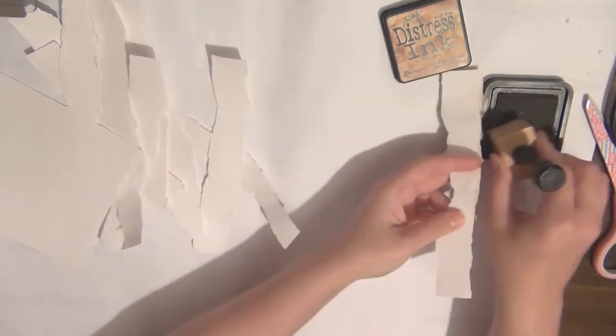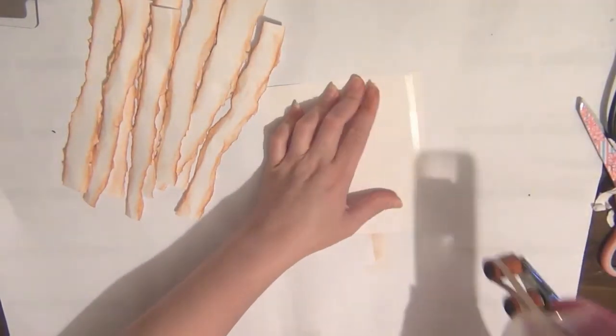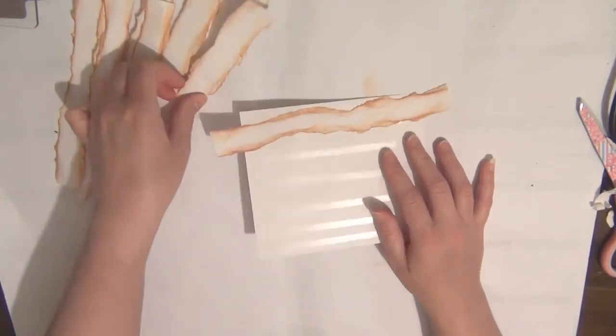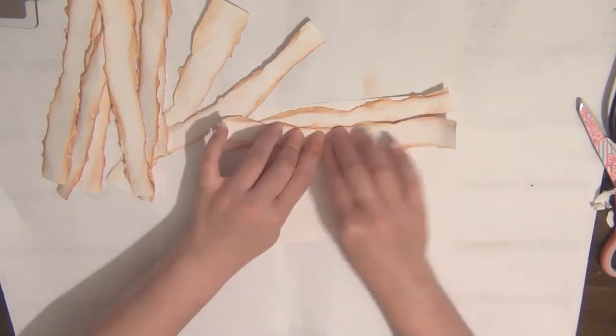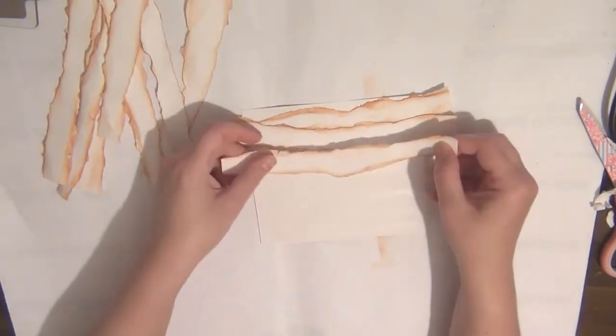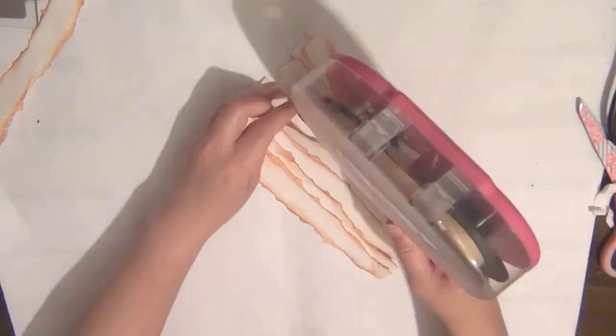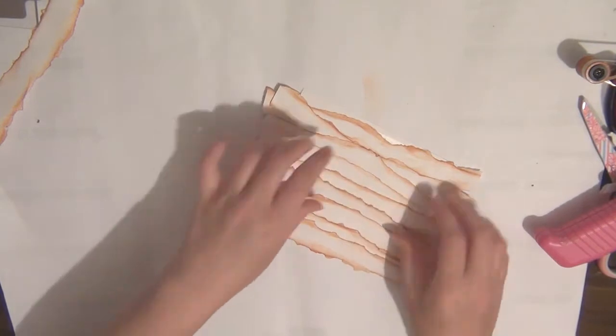Now take your piece of card for your base and add adhesive all over it. You're going to start positioning those strips on an angle, so every time you position it try and change the angle. Don't place that on a straight line—it just seems to give you a better result at the end. Just lift some of the paper and see if there's any loose edges, and if there's any loose edges just adhere that in place.